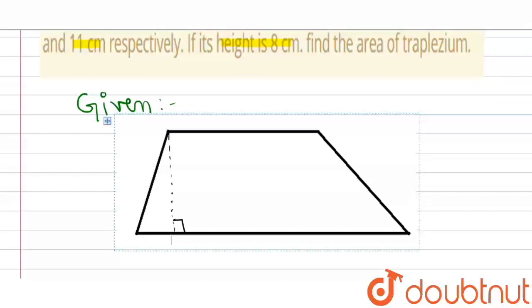It is given that non-parallel sides are 9 and 11. So these are my non-parallel sides. So it is 9 cm and it is my 11 cm, and we have to find the area of trapezium. So we don't know the parallel sides. So let this be the parallel side and its length is A, and this be another parallel side and its length is B.